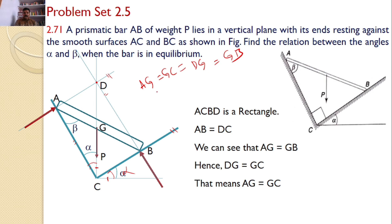All the values are half of the diagonal. So clearly, we can see AG equals GC.